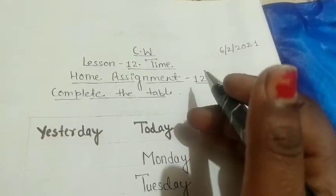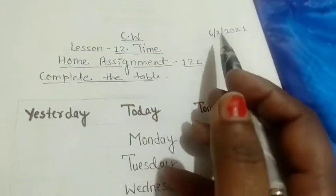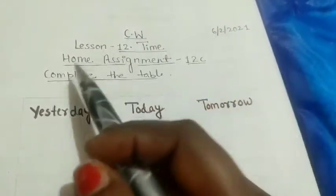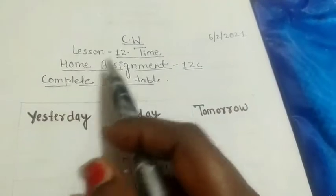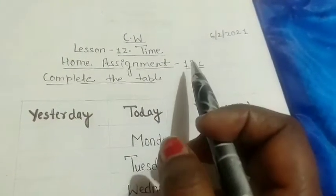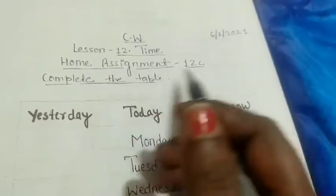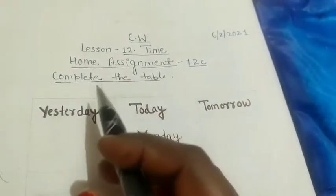Hello students, good morning. This is your math period. Yesterday we had read and learn days of the week. Today we will solve home assignment 12C. All of you take out your classwork copy and take your pencil. Write CW, today's date 6th February 2021, lesson number 12, lesson name is Time, and after that write home assignment 12C.